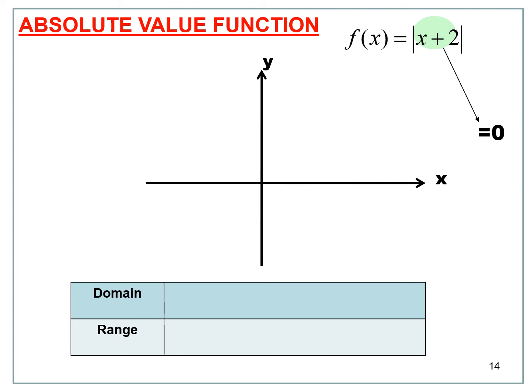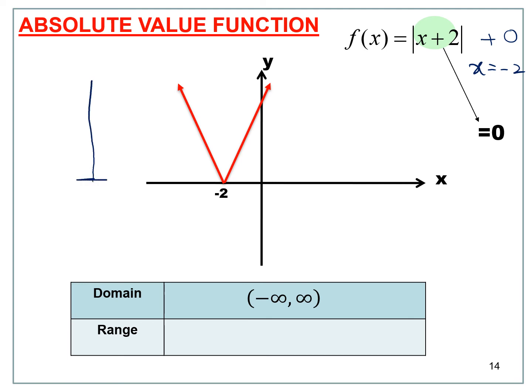For f(x) = |x + 2|, set x + 2 = 0 to get x = -2. Place the coordinate (-2, 0) — this is the vertex since the constant is +0. The axis of symmetry is at x = -2, so put the V-shape there. The domain is negative infinity to infinity, and the range starts from y = 0 to infinity.